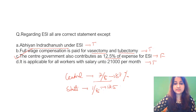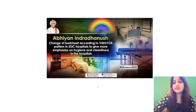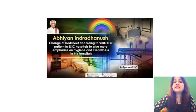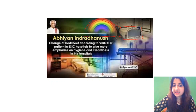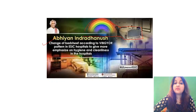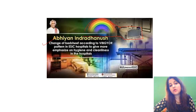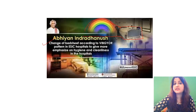Abhyan Indridanush is a scheme under ESI where bedsheets in ESI hospitals are changed according to the colors of the rainbow — this promotes hygiene and cleanliness. Full wage compensation is paid for vasectomy (7 days) and tubectomy (14 days) — true. Remember the logo: it depicts a rainbow and a hospital bed.